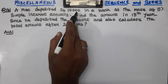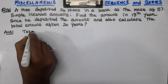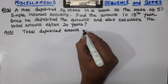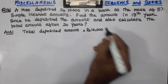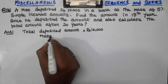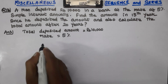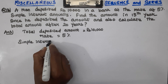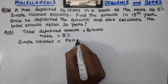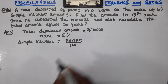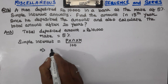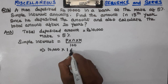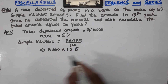The deposit is 10,000 rupees — that is the total deposited amount. The rate of interest is 5%, and we use the simple interest formula PNR divided by 100.